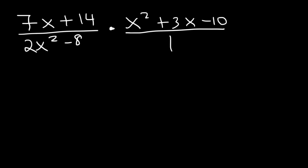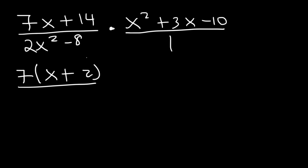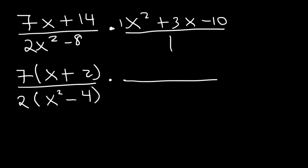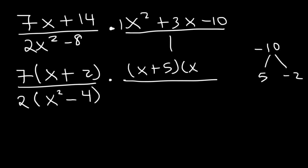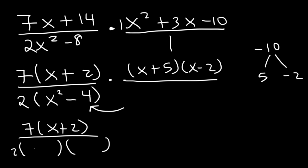What you want to do is factor completely and cancel. 7x plus 14 has a GCF of 7, so we take that out: 7(x + 2). For 2x squared minus 8, take out the GCF of 2, leaving 2(x² − 4). On the right, we have a trinomial with leading coefficient 1 — find two numbers that multiply to negative 10 but add to 3: positive 5 and negative 2, giving (x + 5)(x − 2). Then factor x² − 4 using difference of perfect squares: the square root of x² is x, the square root of 4 is 2, so it factors as (x + 2)(x − 2).